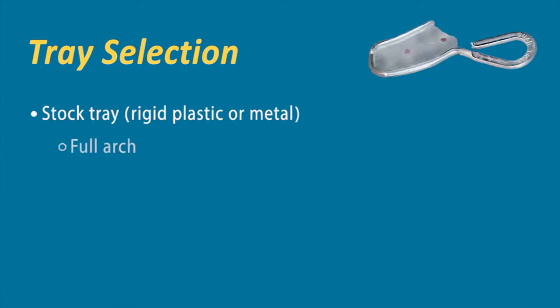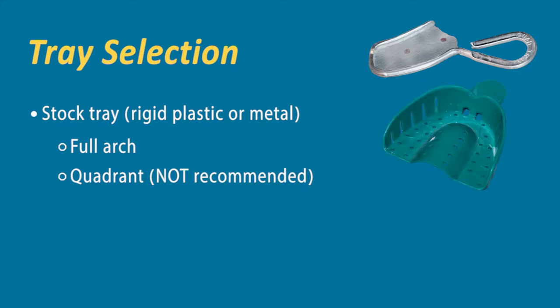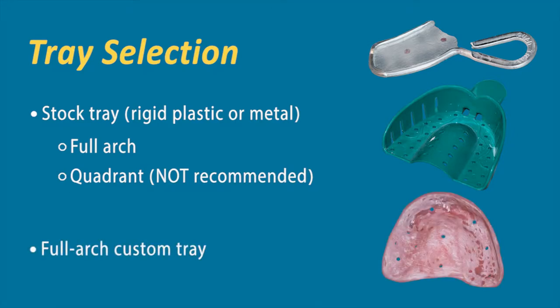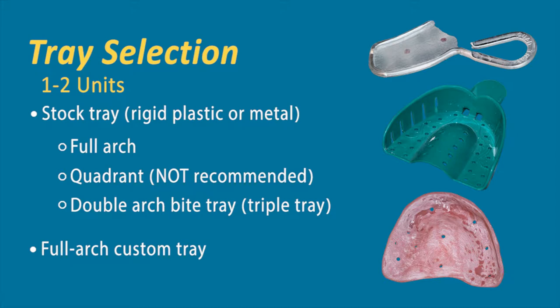Let's talk about proper tray selection. There are really three different types of trays: a stock tray—whether it's a stock full arch, a stock quadrant tray, or a stock triple tray/double arch type tray—and a custom tray. For one to two units of crown and bridge, the most commonly used is a double arch tray, otherwise known as a triple tray, which captures the working arch, the opposing arch, and the bite registration all in one. This can be good quality if utilized in the right situation—one to two units only—and with the proper materials and tray type.